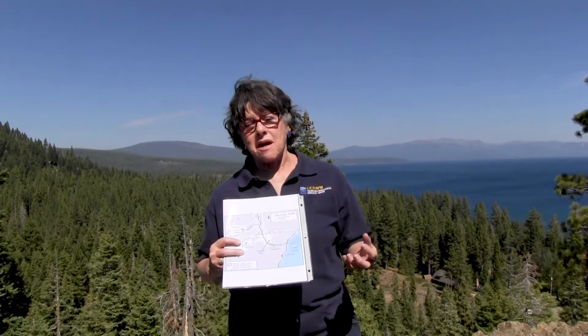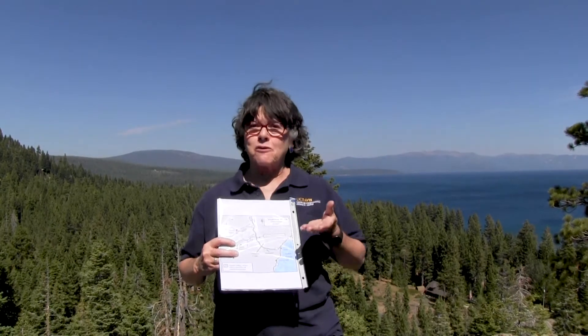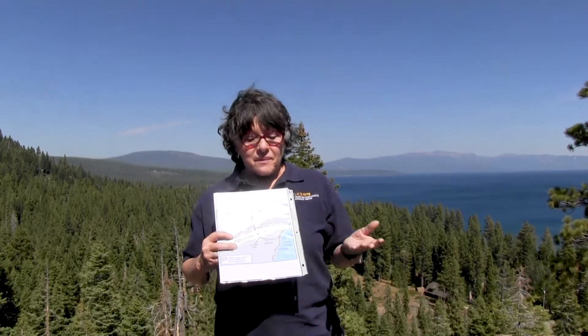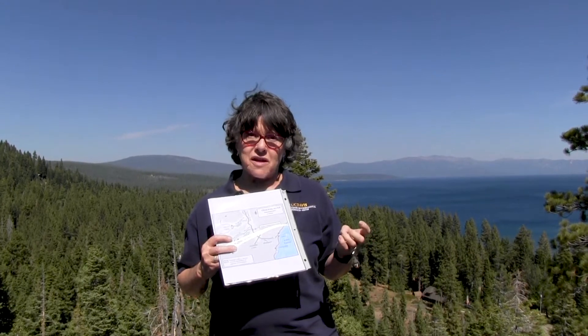Lava flows dammed the Truckee River three times — twice at Rampart and once at Thunder Cliffs. Each dam would raise the lake level, then the river would erode the dam away, then another eruption would raise the lake level again before it was eroded away once more. After all was said and done, there are now ancient shorelines at least 600 feet above the current lake level. If these lava flows had not repeatedly dammed the river, the canyon would have been eroded much deeper and the lake would not be nearly as deep as it is today.